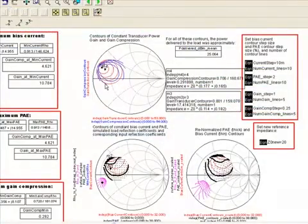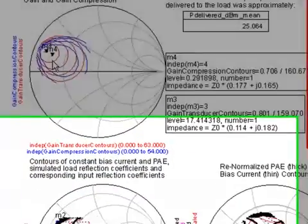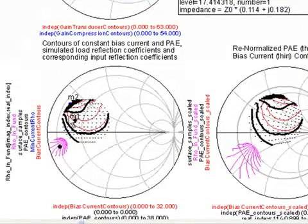The data display shows contours of constant gain and gain compression, as well as contours of constant power out of efficiency and bias current.